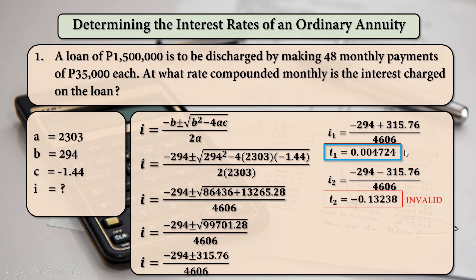So, we are going to take i1 as our i and so we are ready now to solve for the nominal rate j. j is i times m. So, 0.004724 times 12 is equal to 0.0567 or in percentage form that is 5.67%.